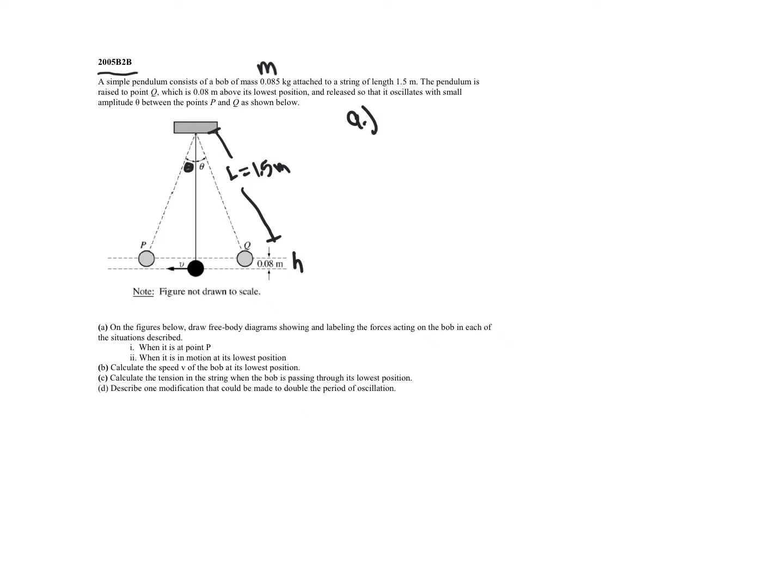So part A1 states, on the figures below, draw a free body diagram showing and labeling the forces acting on the bob in each of the situations described. So at point P, this is right here at point P.